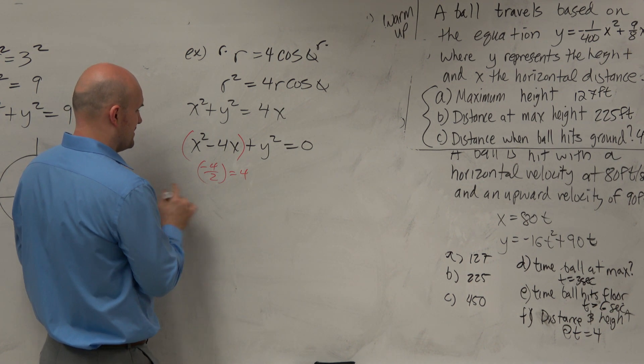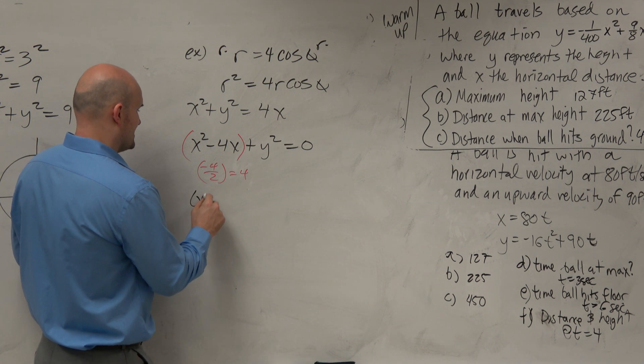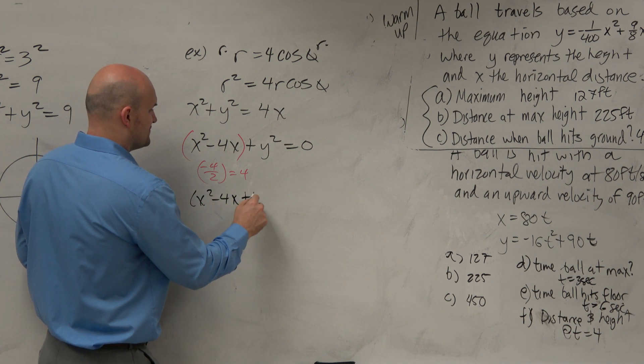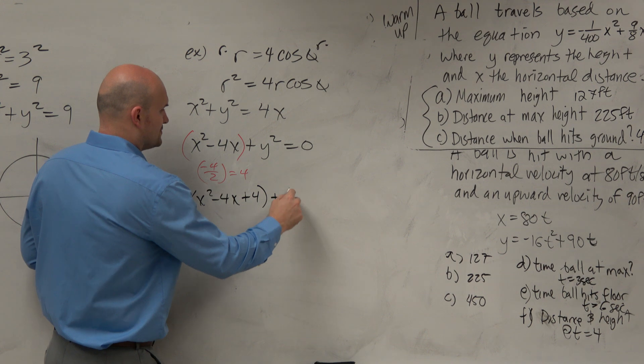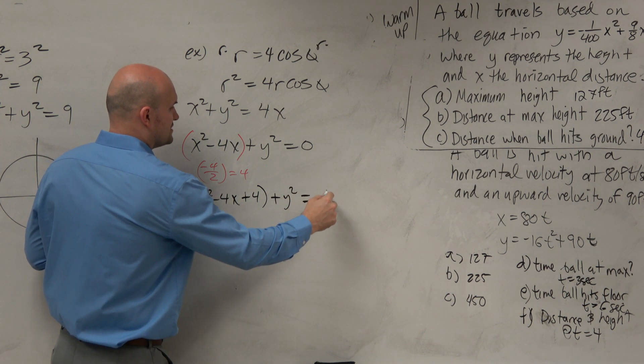So therefore, I'm going to get x squared minus 4x plus 4 plus y squared. And then I'm going to subtract the 4 to the other side.